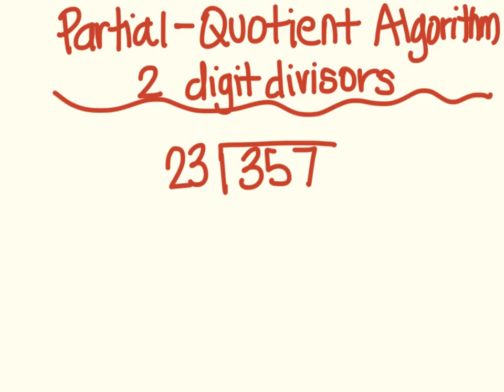Good morning mathematicians. Today we're going to divide using the partial quotient algorithm, and by doing that we're going to do two digit divisors instead of one. So we're going to be doing the same kind of steps but we're going to be working with these two digits, 23, to work through how many times 23 can go into 357.